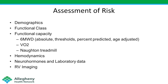This next slide shows how we typically assess risk in the community at present. We look at demographic factors, functional class, and functional capacity — whether measured by the six-minute walk distance or a more advanced method like VO2 testing. We look at hemodynamics derived from right heart catheterization, neurohormones like the NT-proBNP level, other labs like troponin and creatinine, as well as RV imaging.